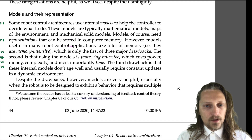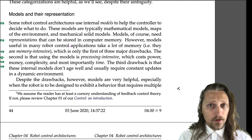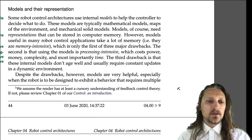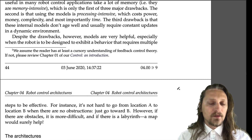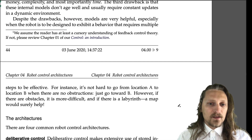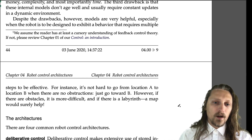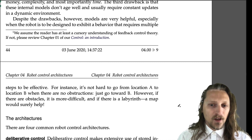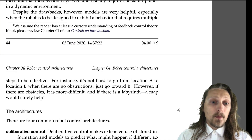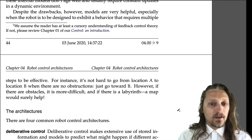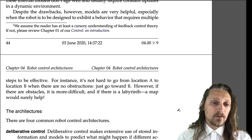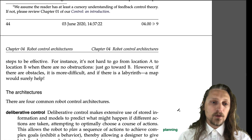Despite the drawbacks, however, models are very helpful, especially when the robot is to be designed to exhibit a behavior that requires multiple steps to be effective. For instance, it's not hard to go from location A to location B when there are no obstructions — just go toward B and you'll be fine. However, if there are obstacles it is more difficult, and if there is a labyrinth, a map would surely help. So let's turn now to the architectures.